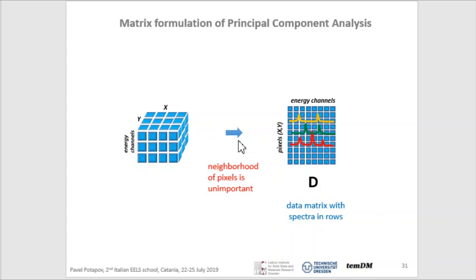Now let's describe PCA in a little bit more formal terms. Mathematically, PCA deals with matrices, so we have first to rearrange our data into matrix form — a matrix where spectra are placed on rows, and each row represents an individual pixel, an individual STEM probe. Originally these pixels can be arranged differently: 3D, 2D, 4D — doesn't matter. We can always recast them into a 1D train, because for PCA the actual neighborhood of pixels is unimportant.